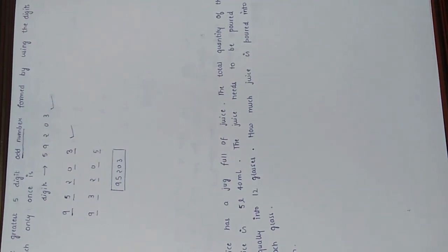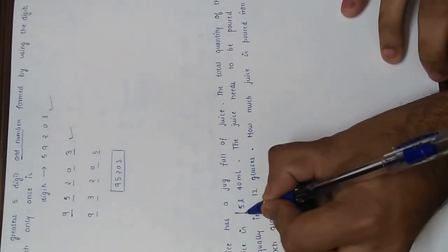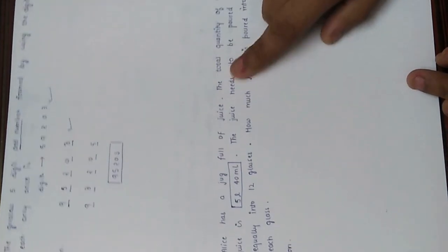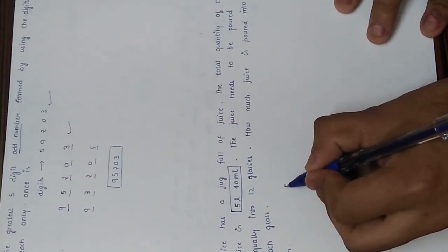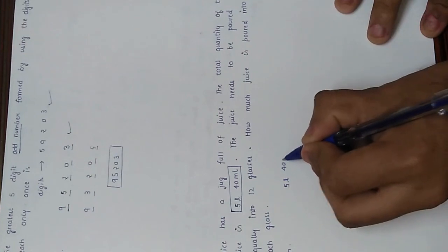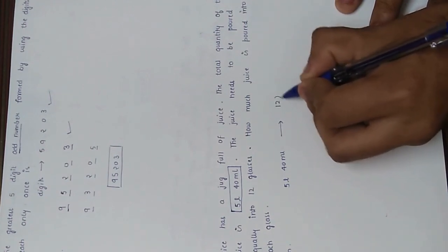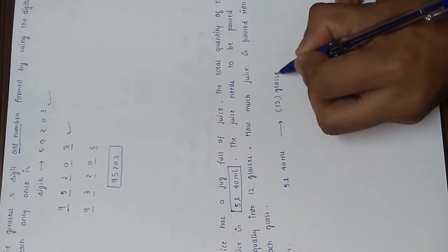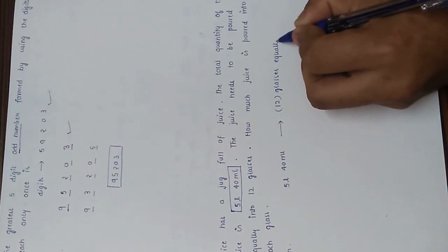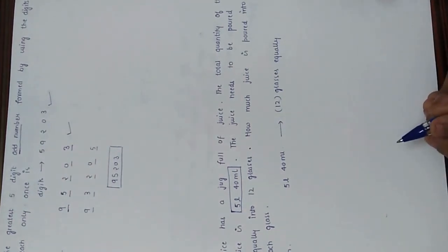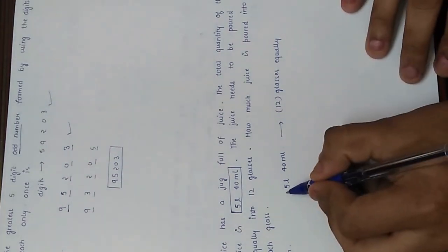Alice has a jug full of juice. The total quantity of juice is 5 liters and 40 milliliters. The juice needs to be poured equally into twelve glasses. To divide something equally, we use division.